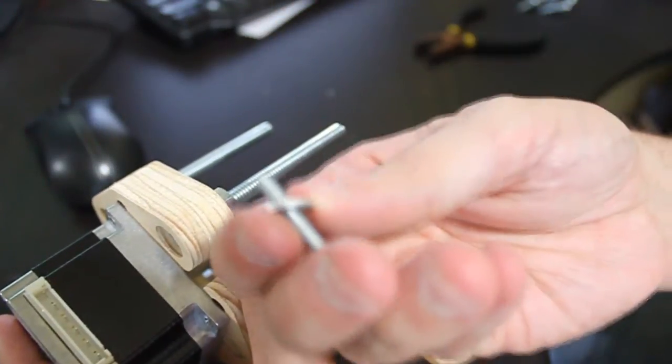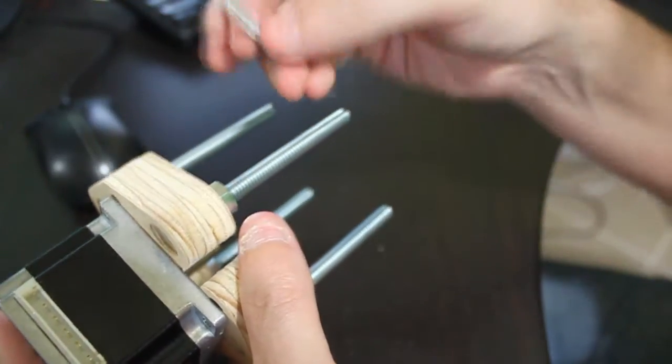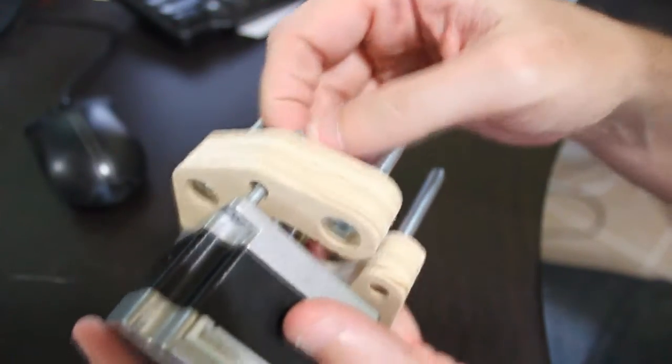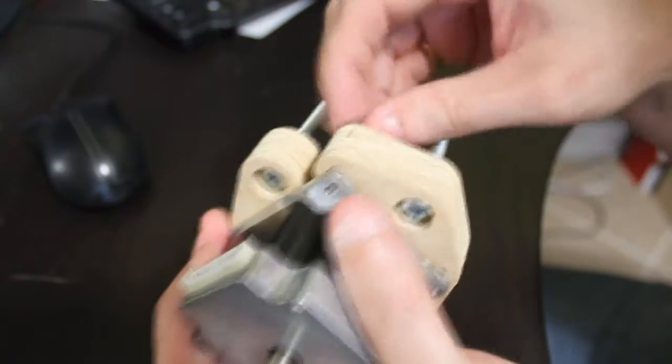If you are using number 8 screws, you will need to insert the screw from the motor frame side and thread the nut onto the screw at the other side of the wood. One inch to one and a half inches should be sufficient for the length of these screws.